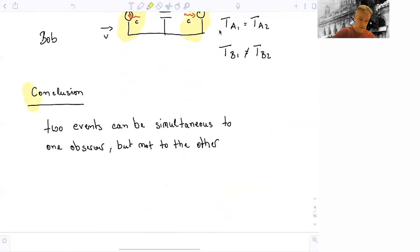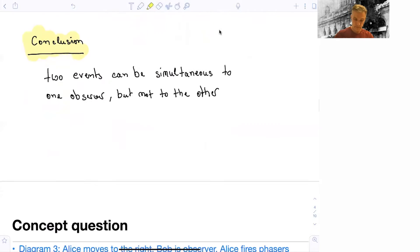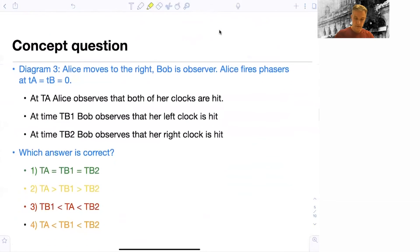We can conclude that two events can be simultaneous to one observer, but not to another one. This is rather confusing, and we will see and use this fact a few times later on when we discuss the famous paradoxes of special relativity.